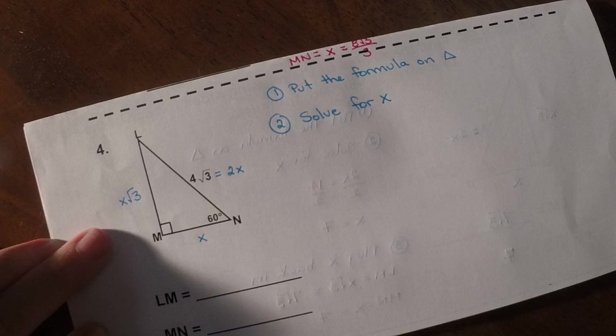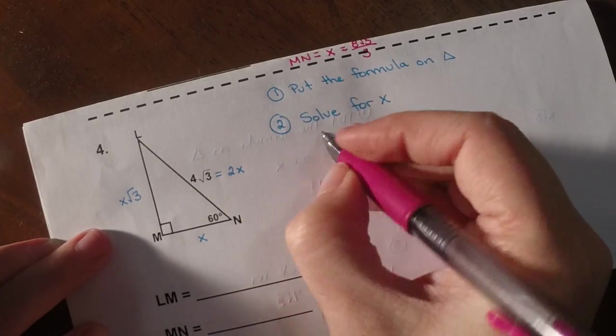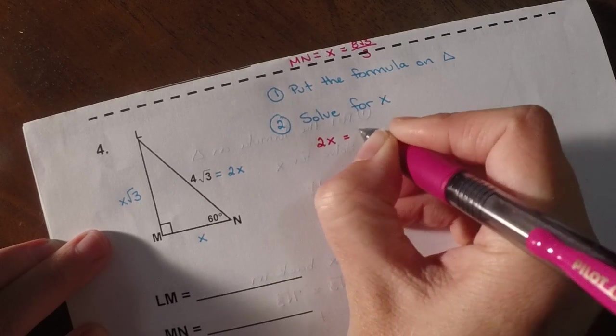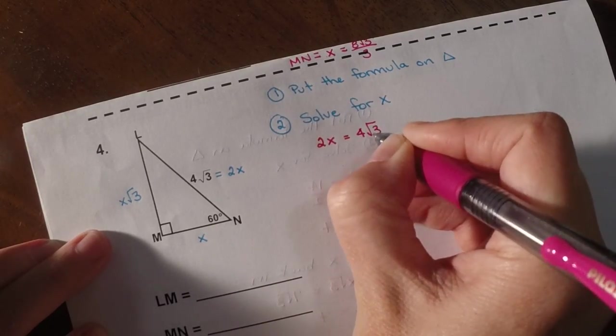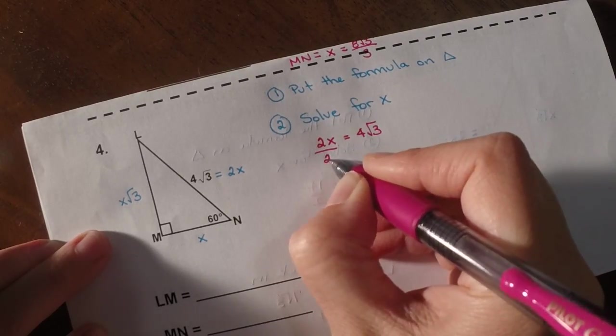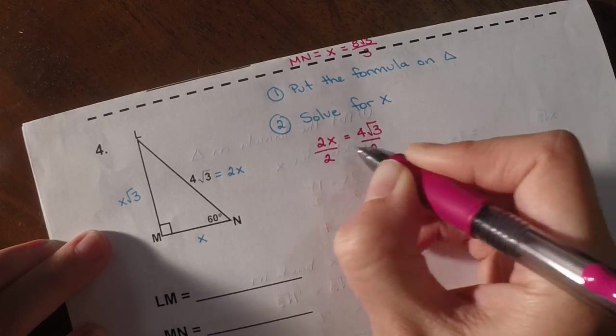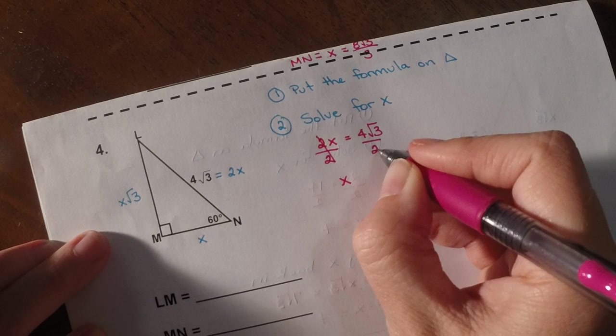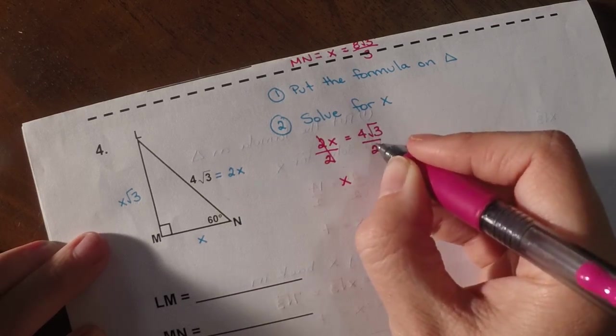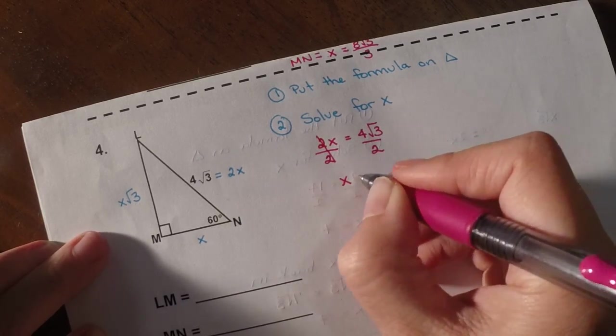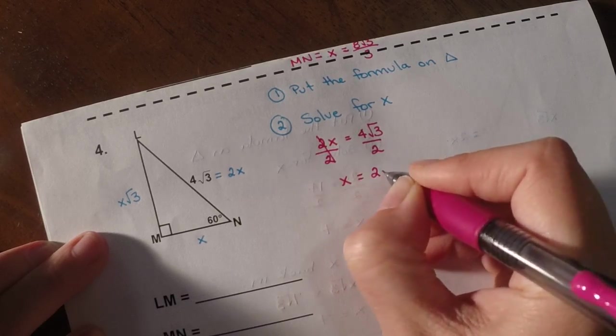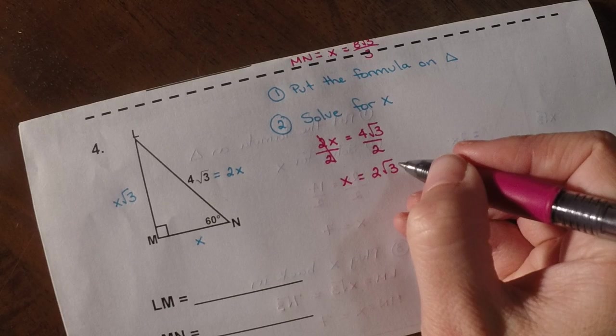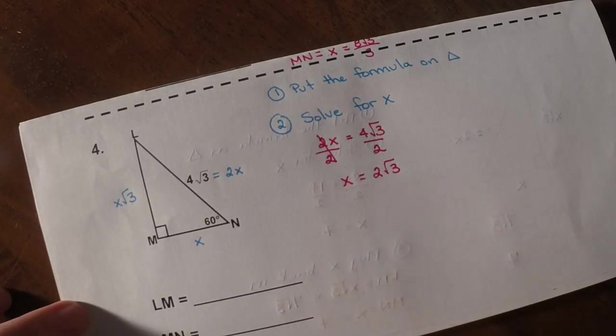So then step 2 is to solve for x. And again, on your worksheet, I don't expect to see this written out, but this is your notes. So 2x equals 4 root 3. So I would have to divide by 2. This is not a time to rationalize because this is not a square root. All I have to do is divide 4 by 2. So 4 divided by 2 is 2. And I have 2 root 3. Good.